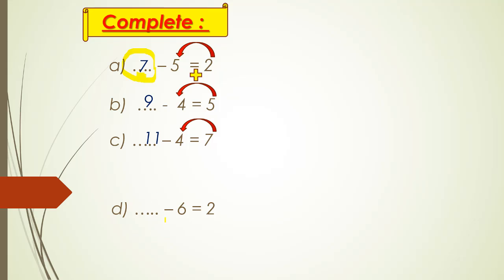Another exercise: missing number before and minus — I will make plus. Six plus two — six in my mind, two in my fingers — after six: seven, eight. The answer is eight.